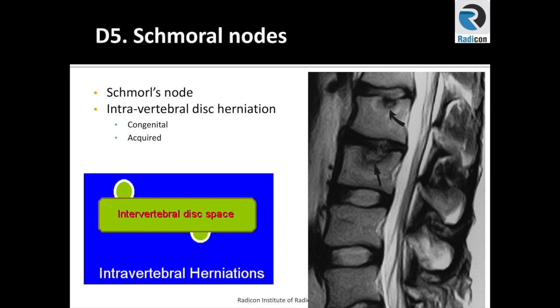When these are large, they can cause significant edema and symptoms of back pain, as seen in this case where two superior end plates have herniated disc material and Schmorl's nodes with high signal change around them. In particular, the lower Schmorl's node is much bigger with associated signal changes in most of the vertebral body and has a higher chance of being symptomatic.